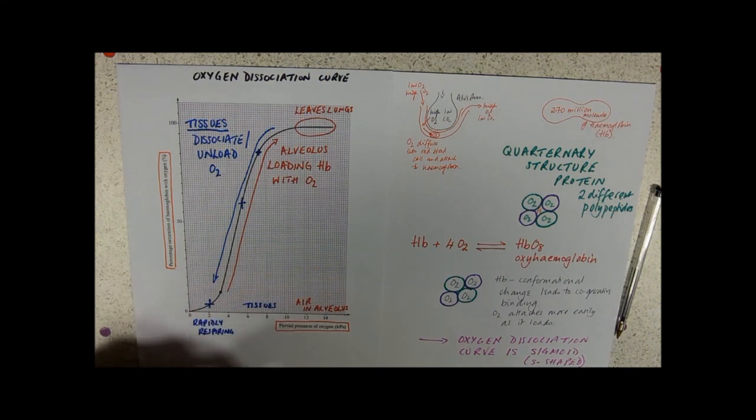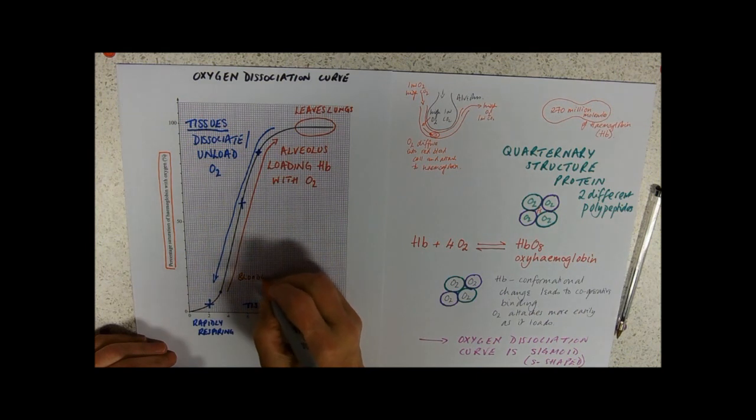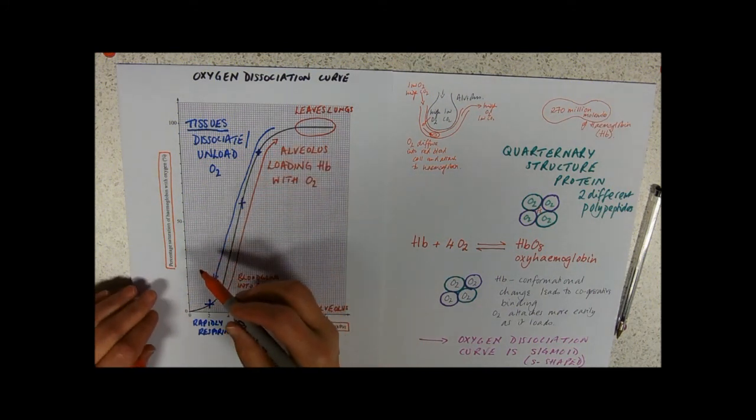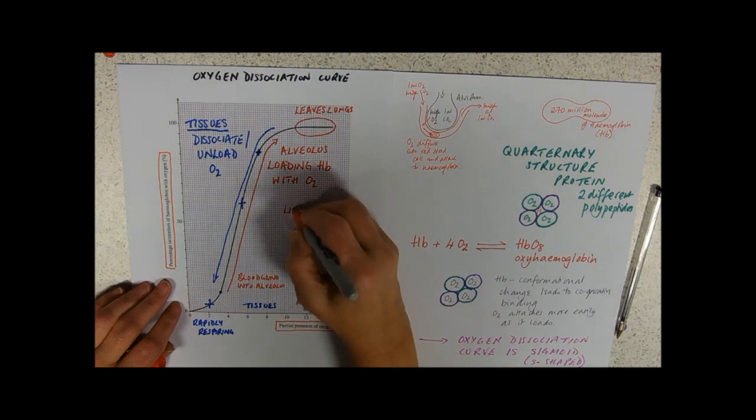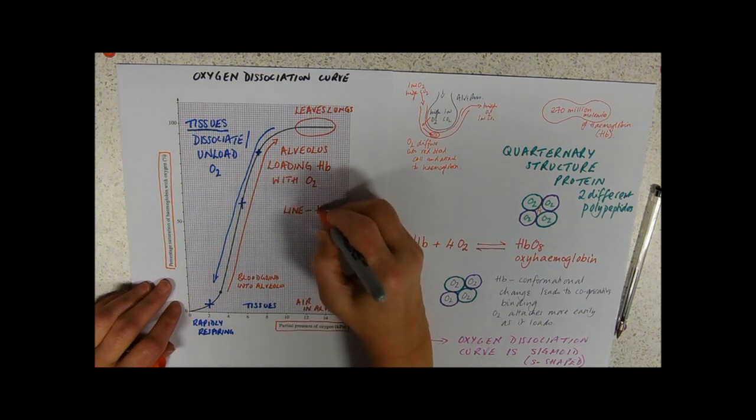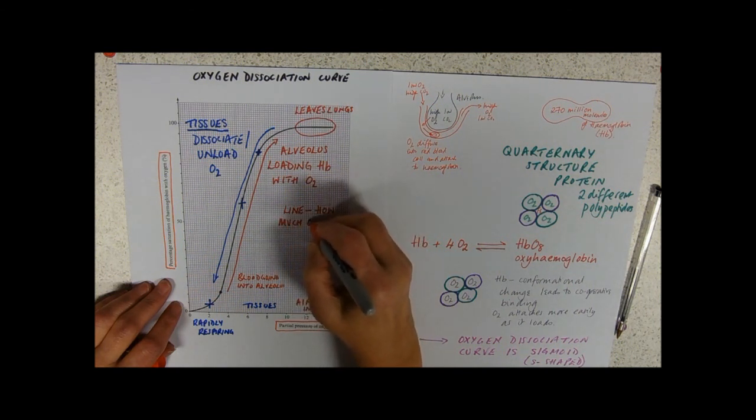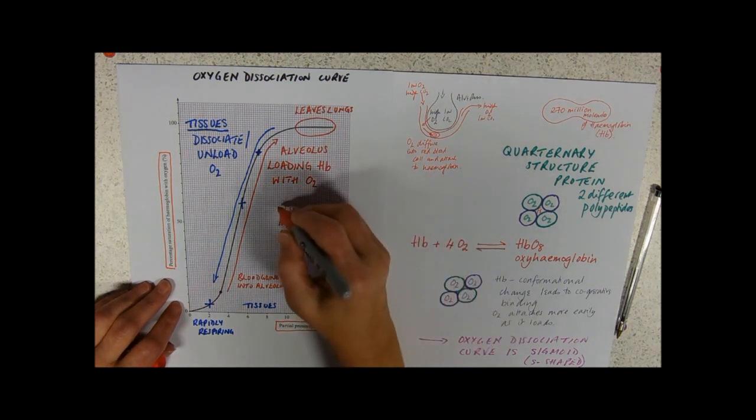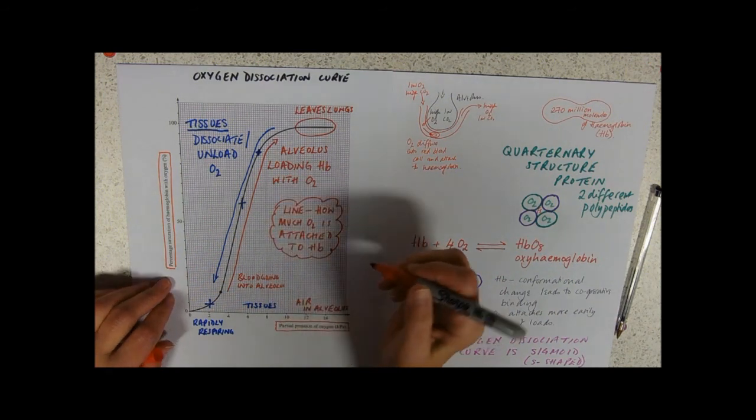Not forgetting that if you're loading, this might be the blood going into the alveolus. What do we need to remember about this? We need to remember that that line represents, if we're reading off that, effectively how much oxygen is attached to hemoglobin. That's quite important.